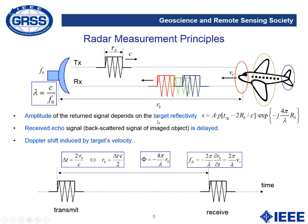The amplitude of the returned signal depends on what is known as the target reflectivity. At the same time, each received echo is delayed as it travels at the speed of light. And finally, there can be a Doppler shift induced by either the radar or target velocity. This means we have three elements we can measure to characterize our target: the amplitude, the delay — which can be directly related with the range distance from the radar to the target — and finally the Doppler frequency.